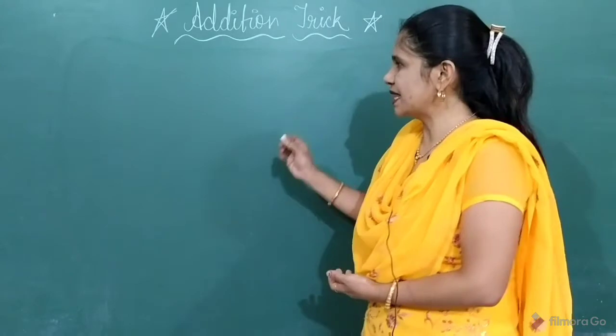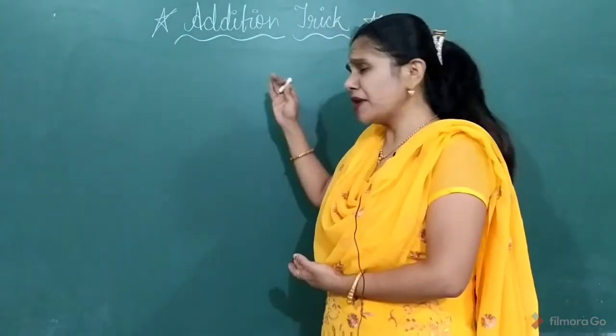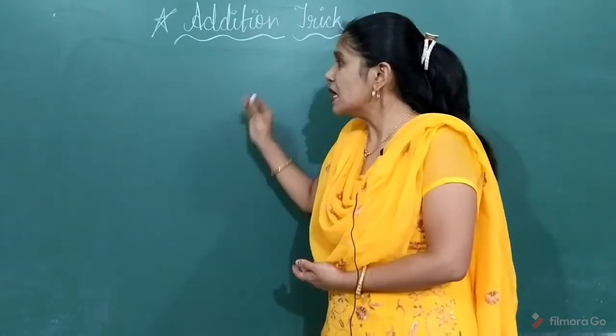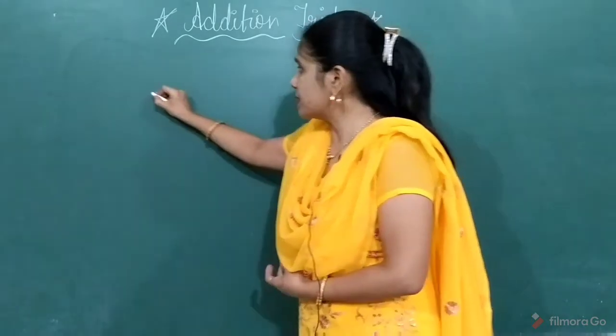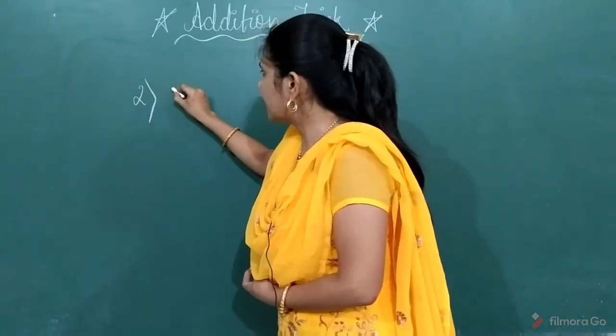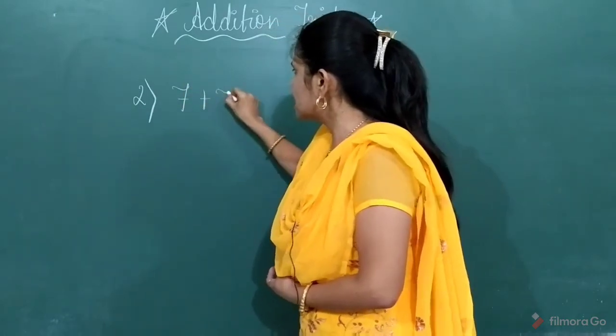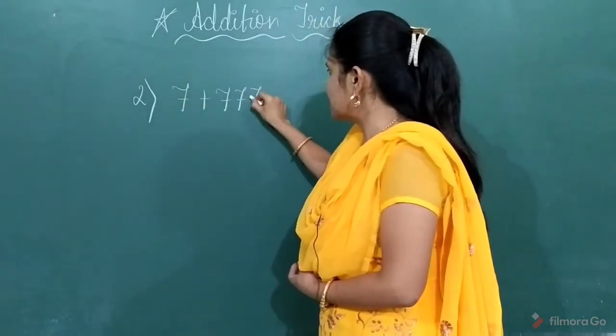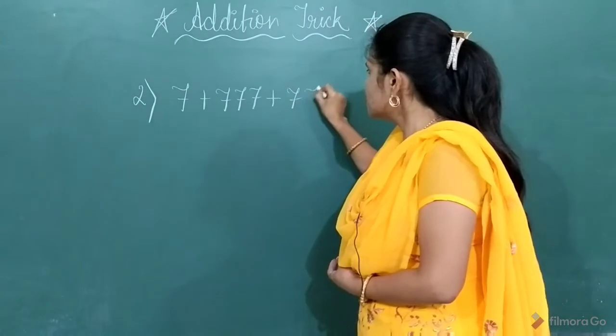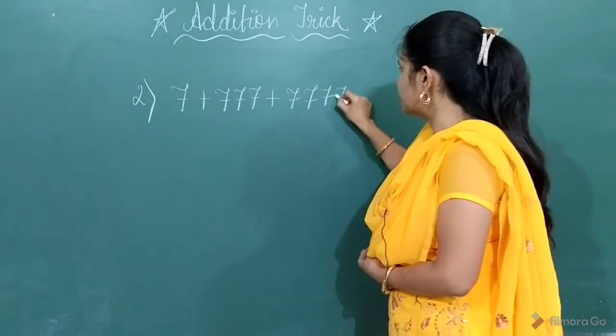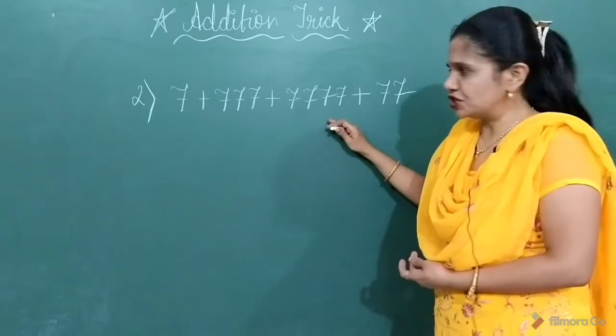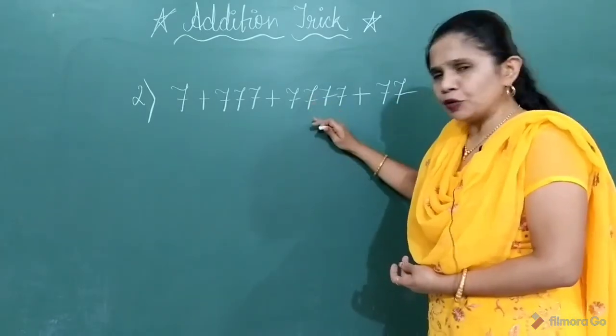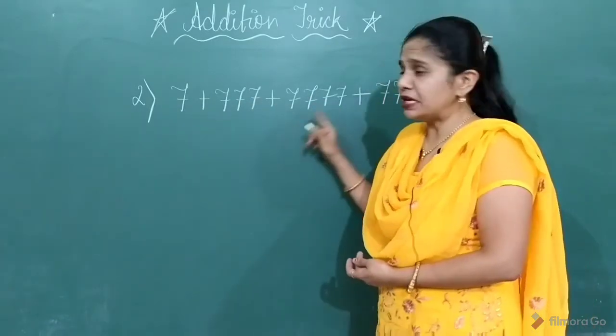Let's start with the second example. Sometimes in exam, to make you confused, they are not giving the numbers in the proper order. For example, suppose you will get the number 7 plus 777 plus 777 plus 77 for addition. Now, here if you will observe, the digit 7 is repeating.